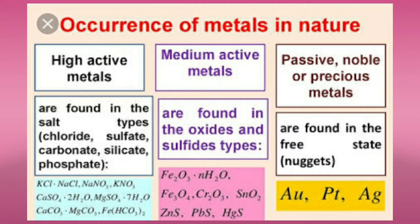Medium active metals such as zinc sulfide, lead sulfide, mercuric sulfide, and copper sulfide are found in the form of oxides and sulfides. Noble or precious metals like gold, platinum, and silver are found in the free state.